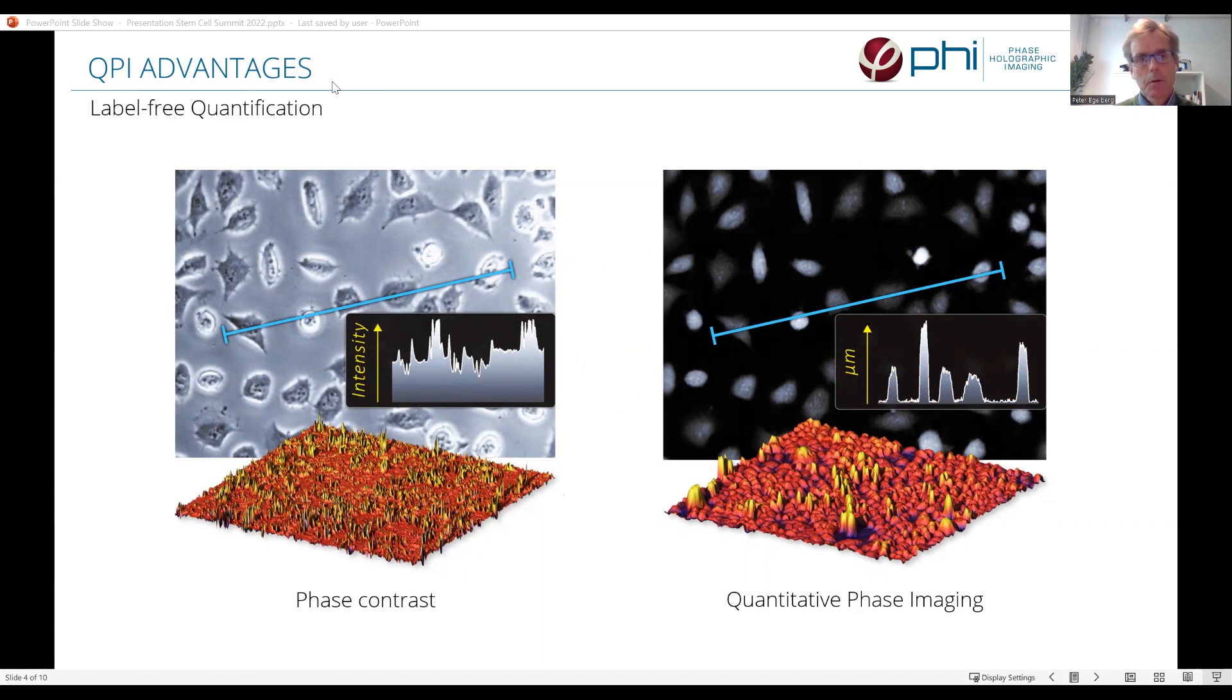There are two major advantages with quantitative phase imaging. The first one is that the cells are much easier segmented by a computer algorithm. On the left here is a traditional phase contrast image. And the light intensity across this line is plotted here. As you can see, it's difficult to tell where the cell begins or ends when you go across this profile. When you look at the quantitative phase image, it looks quite differently. As you can see here in the corresponding plot, the cells are very easily identified when you follow the intensity profile.